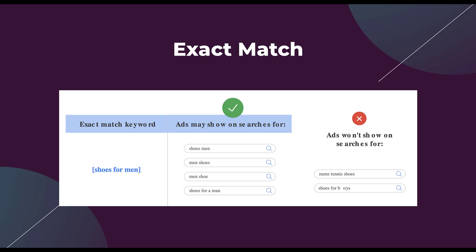On the right, you'll see some examples that your ads won't show for — like men's tennis shoes or shoes for boys. So you can see that Google can tell a difference between men and boys, and it will also designate a difference between people just looking for shoes and people looking for men's tennis shoes, which will be different according to Google.